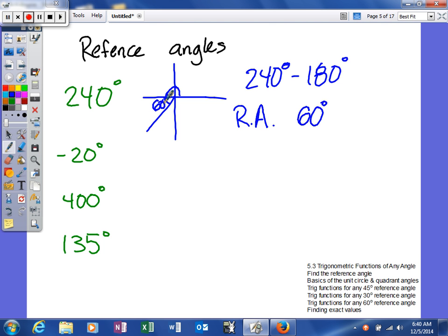Look at the next one, negative 20 degrees. Well negative 20 is not within 360 and 0 degrees, so I'm actually gonna find a co-terminal angle first. So I'm gonna go ahead and add those together. When I do that I get 340.